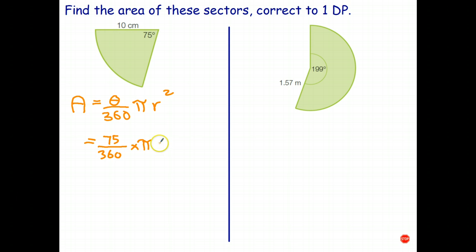My suggestion is leave it as pi and use your pi button because that's a lot more accurate. And the radius in this case is 10 centimeters so we just go times 10 squared.